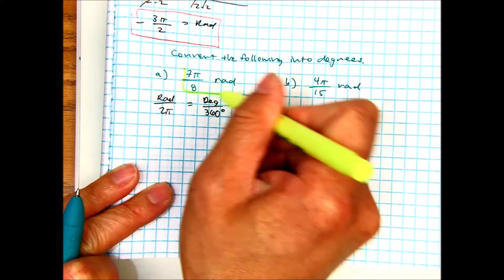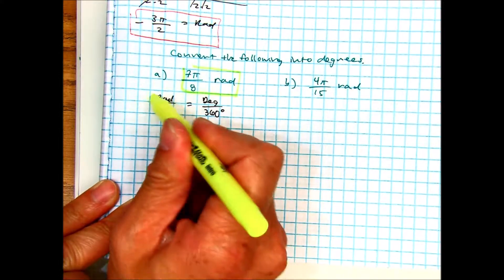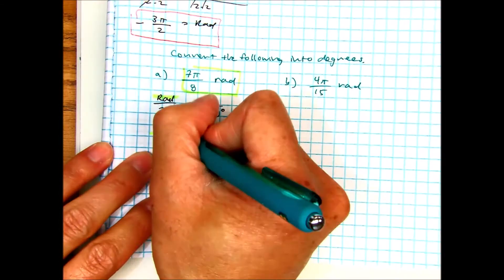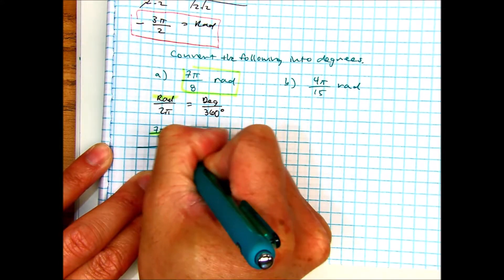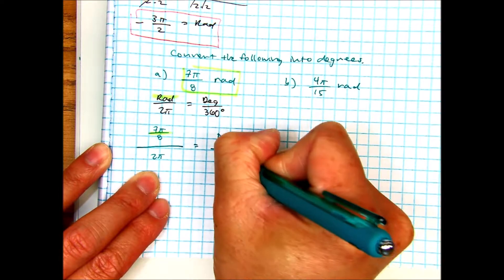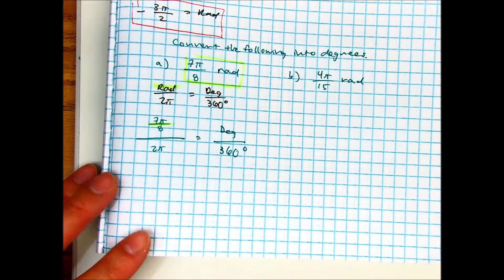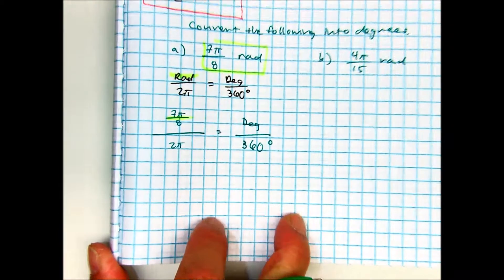So, I'm going to put this where, class? Where it says radians. 7π over 8, divided by 2π, equals degree over 360 degrees. Class, what do we do next?